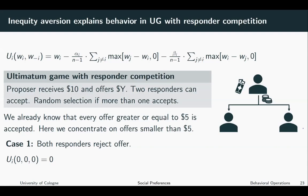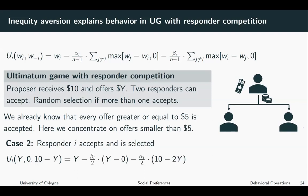We will look at three different possible cases for the responders. The first case is where both responders reject the offer. In this case, every party receives a payment of zero and there is also zero inequality between the three parties, so the utility of responder I is just zero.